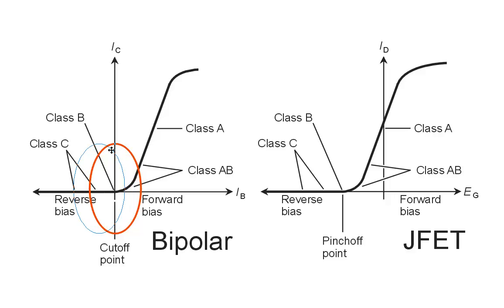In the case of class C operation, the no signal bias point is actually in the cutoff zone or the pinched off zone. In order to get any output at all from the device, we need to have a significant amount of driving power, more than any of the other types of amplifiers.